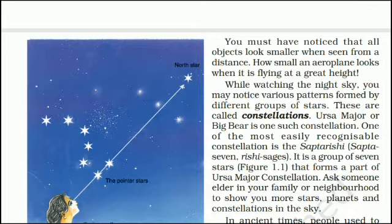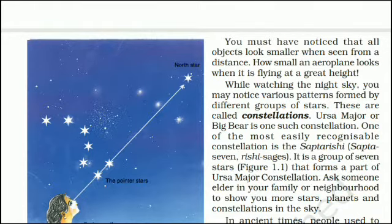While watching the night sky, you may notice various patterns formed by different groups of stars. These are called constellations. Ursa Major, or Big Bear, is one such constellation. One of the most easily recognizable constellations is the Saptrishi — Sapta meaning seven, Rishi meaning sages. It is a group of seven stars that forms a part of the Ursa Major constellation. Ask someone elder in your family or neighborhood to show you more stars, planets and constellations in the sky.